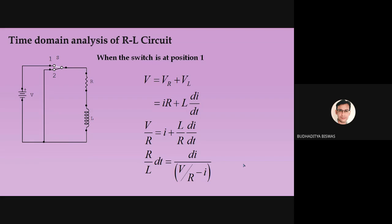If you press the switch, can the bulb glow after one second or instantly? Instantly. So for a resistive load, if we give power, it starts working instantly. But two components in electrical engineering cause maximum power transfer to not happen instantly — one is inductance, another is capacitance. Inductance is a coil whose property is to oppose changes of current. For a capacitor, it does not catch voltage instantly.